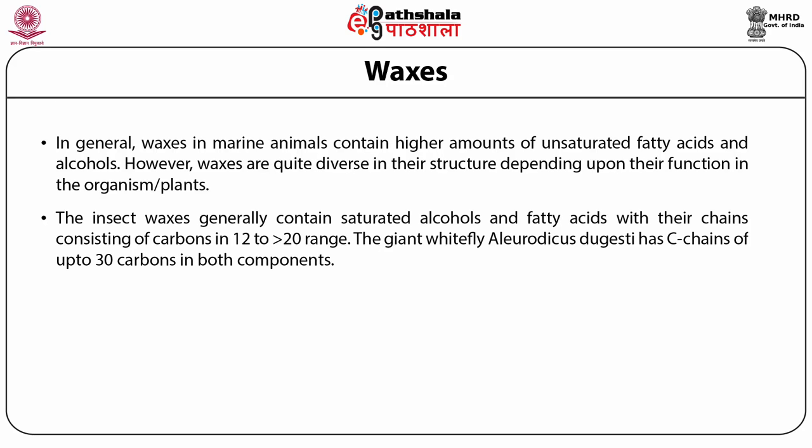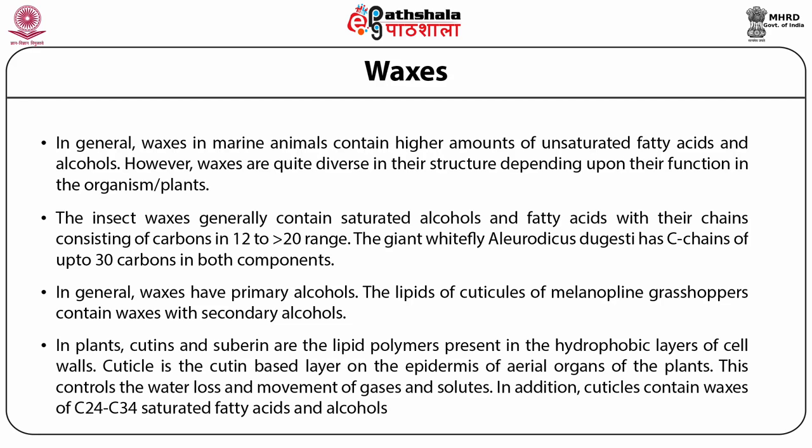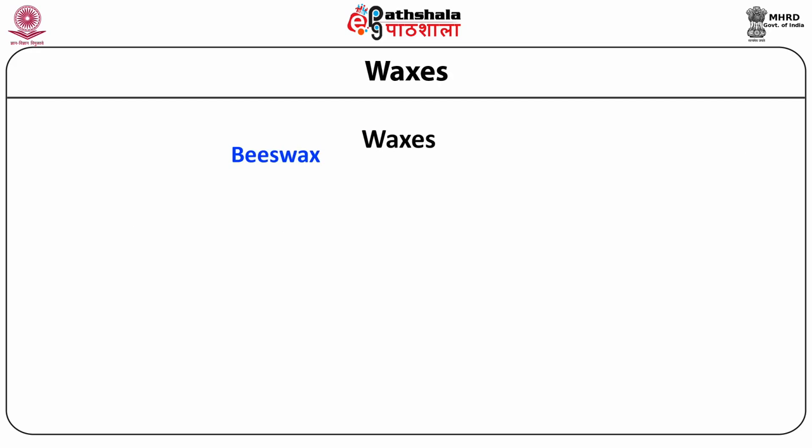The insect waxes generally contain saturated alcohols and fatty acids with their chains consisting of carbons in the 12 to more than 20 range. The giant white fly alerodocus deugasti has carbon chains of up to 30 carbons in both components. In general, waxes have primary alcohols. The lipids of the cuticles of melanopylene grasshoppers contain waxes with secondary alcohols though. In plants, cutenes and suberene are the lipid polymers present in the hydrophobic layers of cell walls. Cuticle is the cutene-based layer on the epidermis of aerial organs of plants, which controls water loss and the movement of gases and solutes. Cuticles also contain waxes of C24 to C34 saturated fatty acids and alcohols.